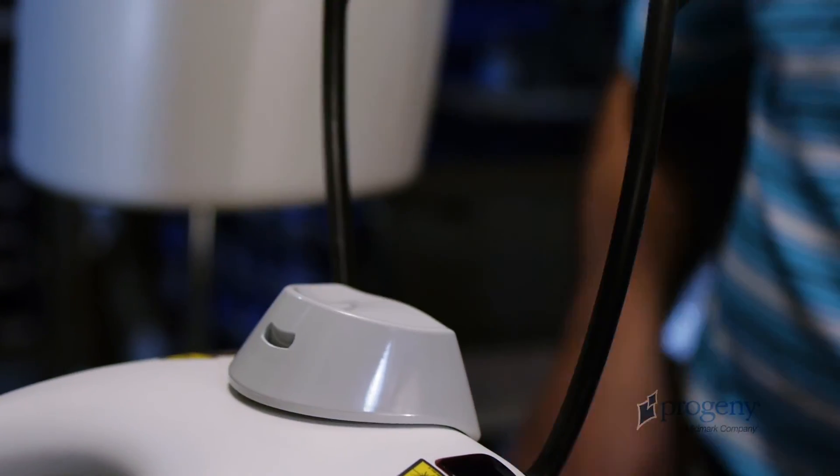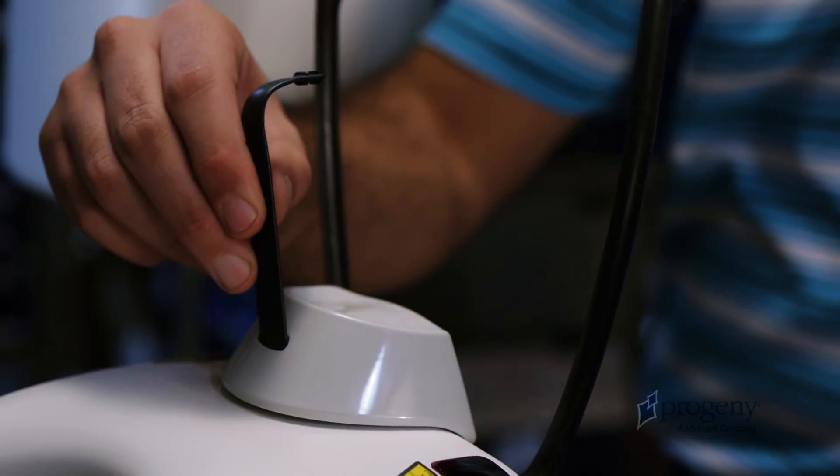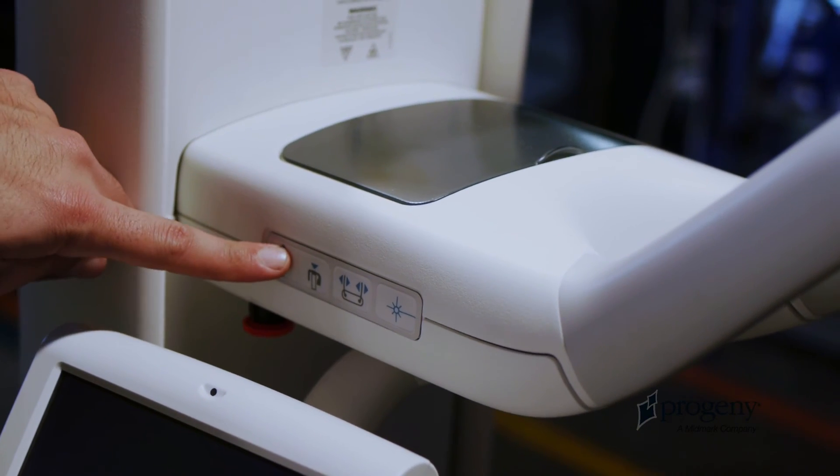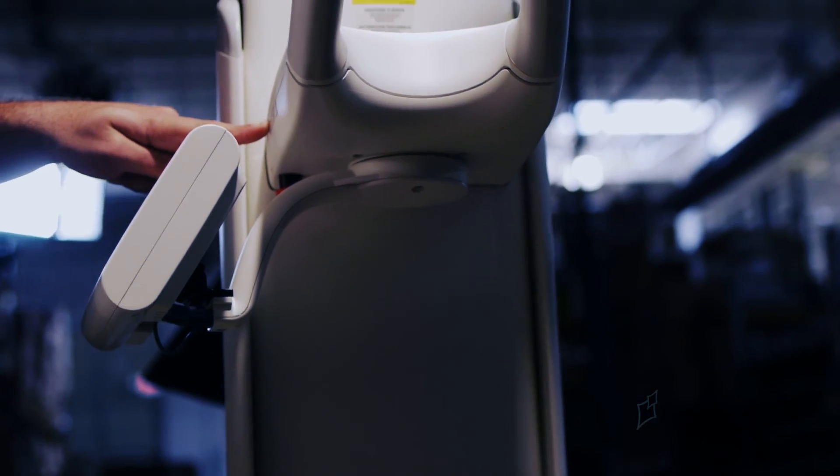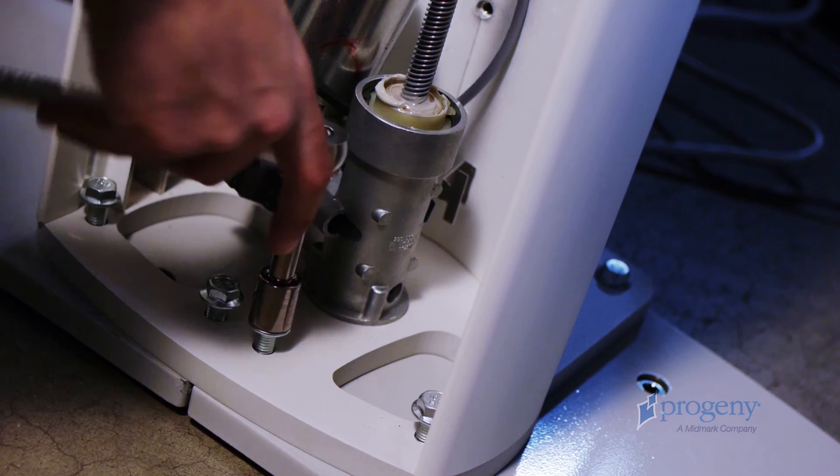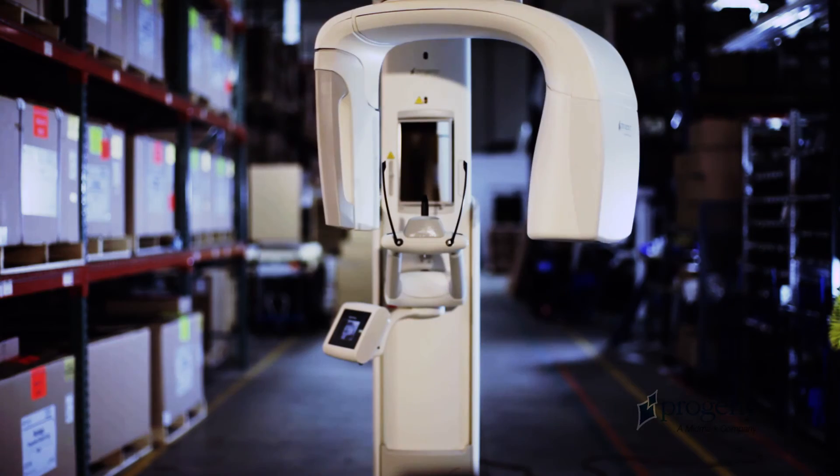Attach the chin support and the panoramic bite piece to the patient table and place all remaining accessories in the patient table compartment. If installing using the freestanding floor base, complete installation of the bolts now accessible at the front base of the main column.